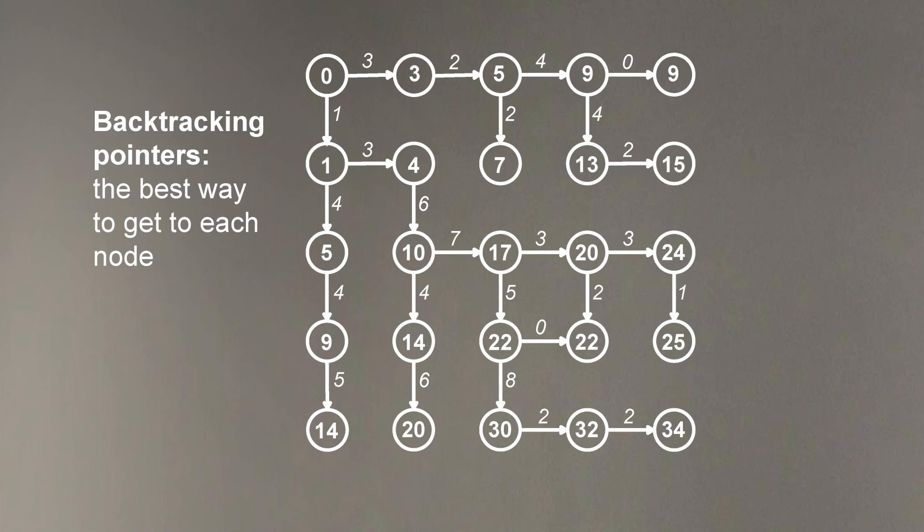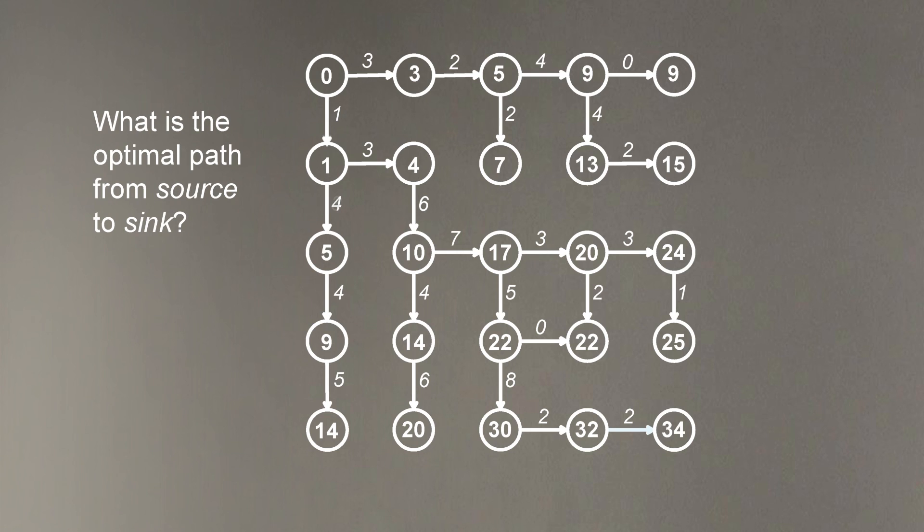And now, I hope it will become clear why we were retaining information about bold edges. Because 34, the number in the last node, tells us the length of the longest path. But it doesn't tell us how this longest path was traversing the graph. But with bold edges, we can figure out. Because we know that we arrive to the last node, marked by 34, by moving along the horizontal bold edge. Here it is.